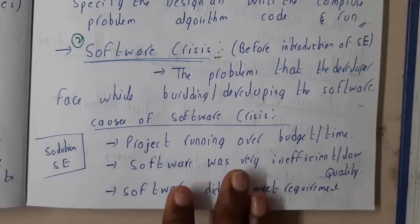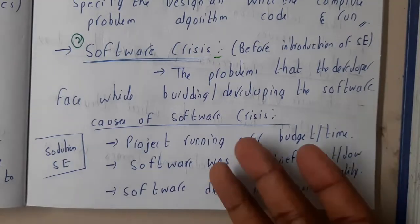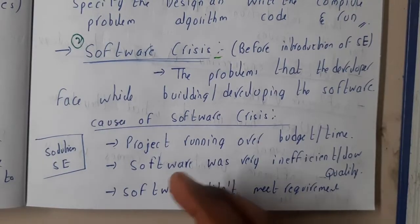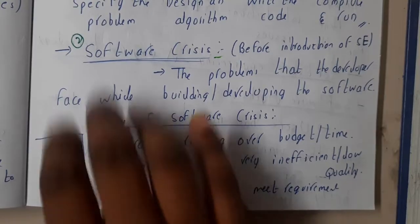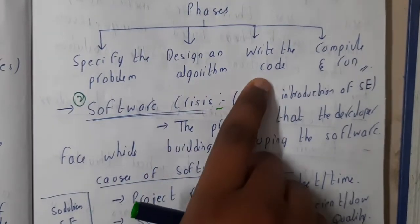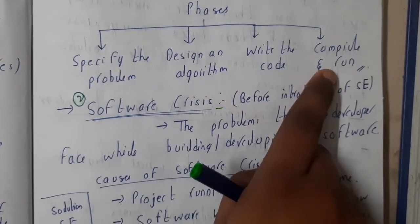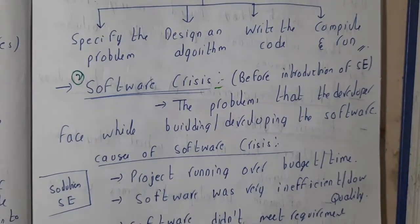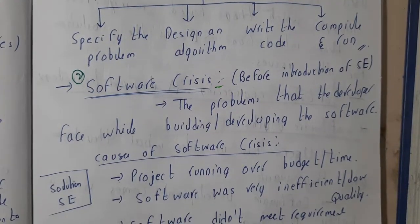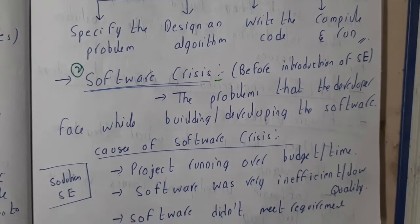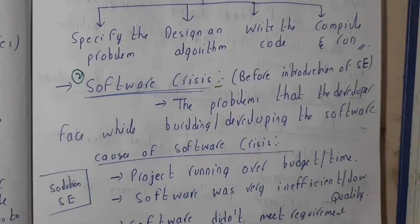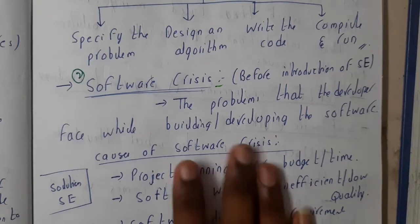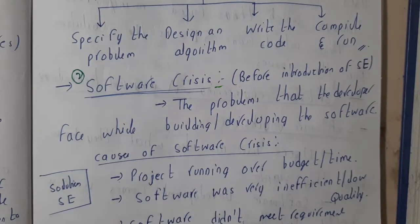Before the introduction of the process we discussed previously — specifying the problem, designing the algorithm, writing the code, and compiling and running — the software engineers used to write code directly without understanding the concept or the requirements.